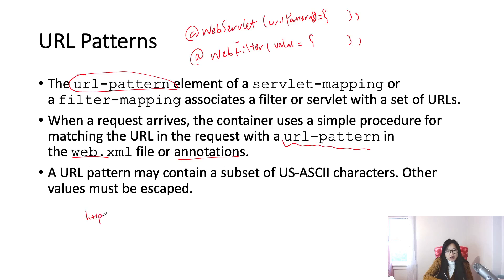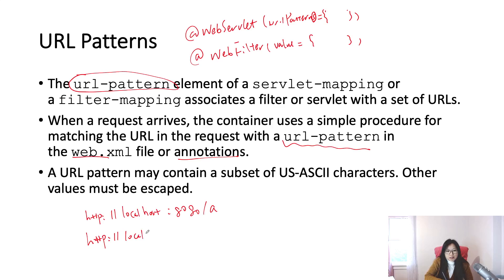Also, the URL matching is considered using bytes instead of characters. For example, if we have localhost:8080/a, when doing the matching it will use bytes instead of characters. The four characters '61' is the ASCII representation of lowercase 'a'. You don't need to know the details — the container will do the matching for us.